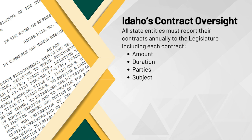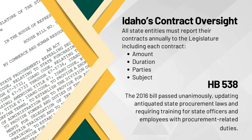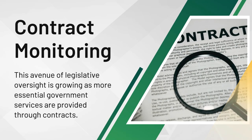Idaho is among the stronger examples of contract oversight. All state entities, including ones exempt from competitive bid requirements, must report their contracts annually to the legislature on the first day of regular session, including each contract amount, duration, the parties, and the subject. House Bill 538 from 2016 passed unanimously and was signed by the governor to update antiquated state procurement laws and to require training for state officers and employees with procurement-related duties. This avenue of state legislative oversight is growing across the country as more essential government services are provided through contracts.